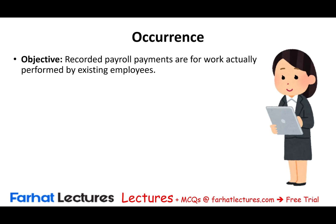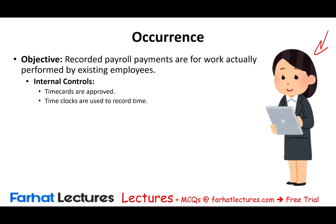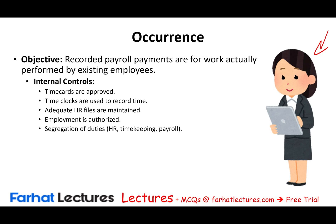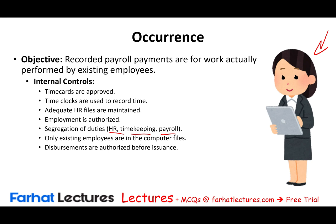Occurrence means the recorded payroll payments are for work actually done — we have actual employees who actually did their work, with a job sheet signed and approved by a supervisor. Key internal controls for occurrence include: time cards are approved; time clocks are used to record time; adequate HR files are maintained so only legitimate employees are added; employment is authorized; segregation of duties between HR, timekeeping, payroll, and treasurer; only existing employees are in the computer files; and disbursements are authorized before being issued.